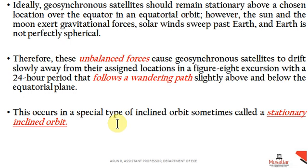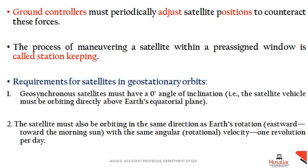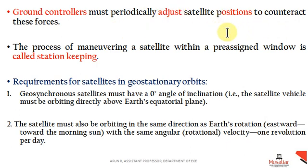The ground controllers of geosynchronous satellites must periodically adjust the satellite's position to counteract these forces. The process of ground controllers periodically adjusting the satellite position in order to counteract these perturbations — gravitational forces and other deviations — is known as station keeping.